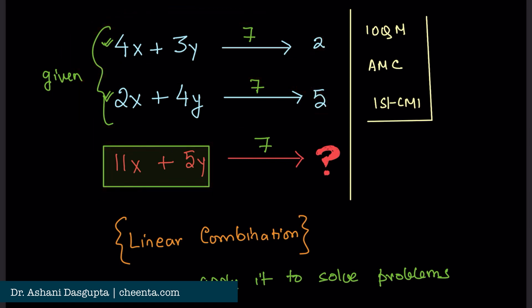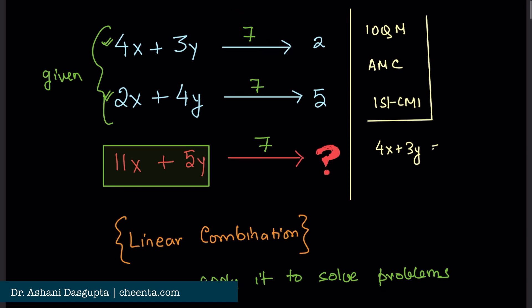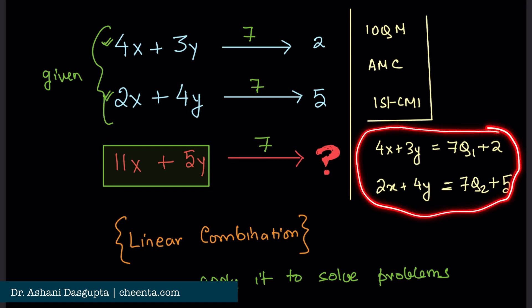First thing first, since 4x plus 3y gives remainder 2 when divided by 7, I can write it as 7 times Q1 plus 2, that is 7 times some quotient plus remainder. Similarly, 2x plus 4y equals to 7 times some quotient 2 plus 5. We have both of these equations in our hand and we can now do the linear combination.